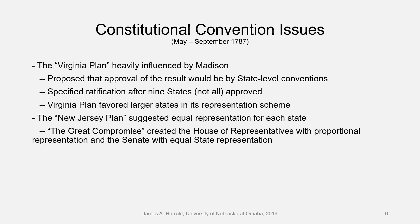Right away, on opening day practically, Madison shows up with something called the Virginia Plan. The Virginia Plan really favored the populous states like Virginia and New York. What it said was that there would be a Congress really based on the size of the state — proportional — so the representation scheme heavily favored larger states.